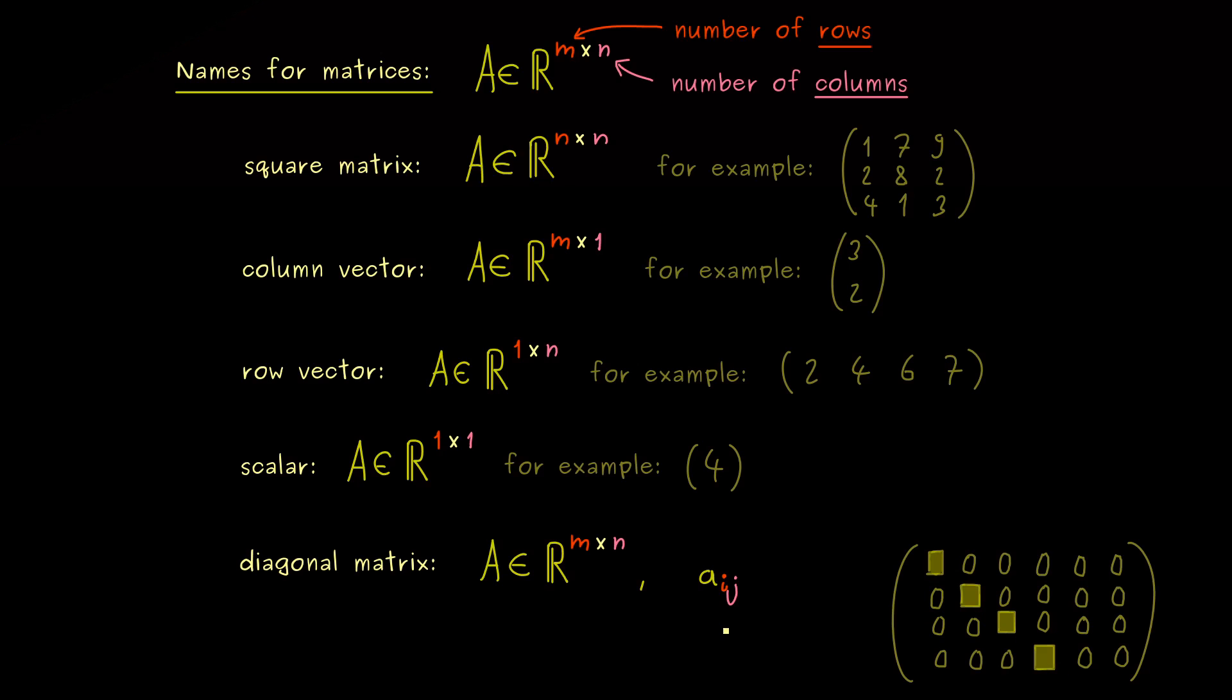Now of course the diagonal in the matrix is characterized by the indices of the components. More precisely we have an element on the diagonal if the index i is the same as the index j. This means for having a diagonal matrix we need that a_ij is 0 whenever i is not the same as j.